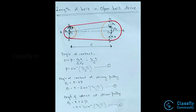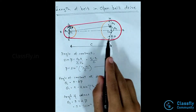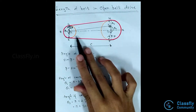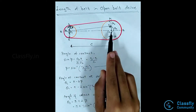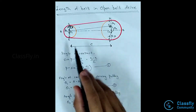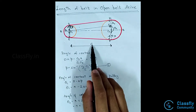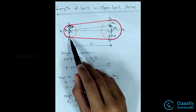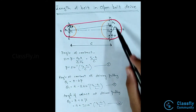Today let us derive the length of the belt in an open belt drive. Consider the following figure — it consists of two pulleys A and B upon which the belt runs. Let O1 and O2 be the centers of the two pulleys, so the distance between the centers will be C. The belt comes in contact with the pulleys at points E, G, H, and F.